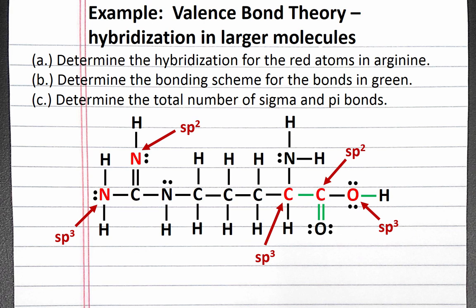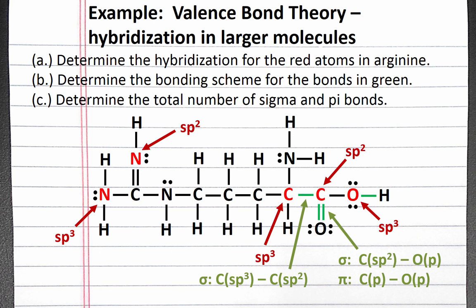Now we can determine the bonding schemes for the bonds in green. For the single bond on the left, we have a sigma bond created using one sp3 hybridized orbital from the carbon on the left and one sp2 hybridized orbital from the carbon on the right. For the double bond, we have one sigma component created using the sp2 hybridized orbital from carbon and an unhybridized p orbital on oxygen. For the single bond on the right, we have a sigma bond created using the unhybridized p orbital on carbon and another unhybridized p orbital on oxygen, and also a sigma bond created using oxygen's sp3 hybridized orbital and the unhybridized 1s orbital of hydrogen.